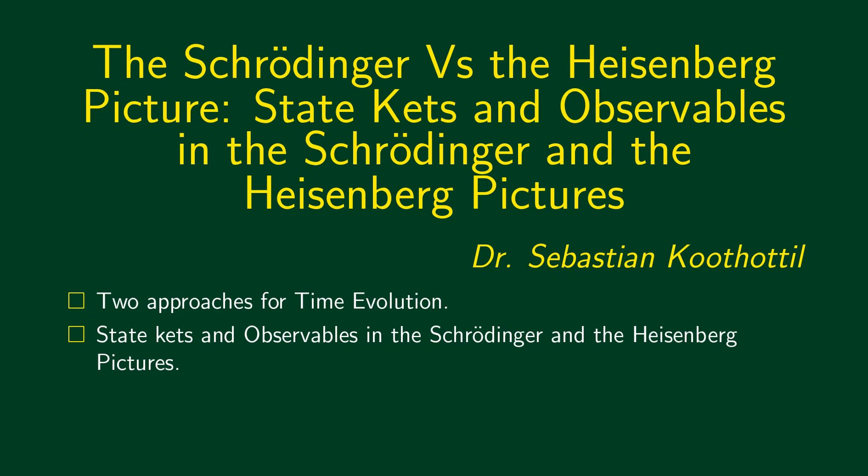The next topic we are going to discuss is state kets and observables in the Schrödinger and the Heisenberg pictures. In the last session, we said that there can be two different approaches to unitary transformations. We can either talk about the unitary transformation of the states or the unitary transformations of operators, observables. In the first approach, states change under the unitary transformation and operators remain the same. There will be no change to the operators.